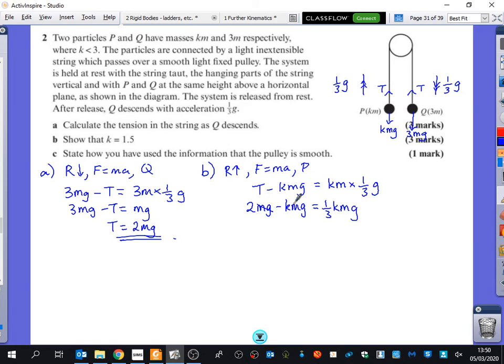I can cancel out the MG everywhere, which is why I don't often use G as 9.8 during a calculation. I tend to do it at the end in case anything cancels. So I get 2 minus K equals a third K. So 2 equals a third plus 1, which is 4 over 3K. So K is equal to 6 over 4, just by multiplying and rearranging, which is 3 over 2, or they wanted it as a decimal, 1.5.